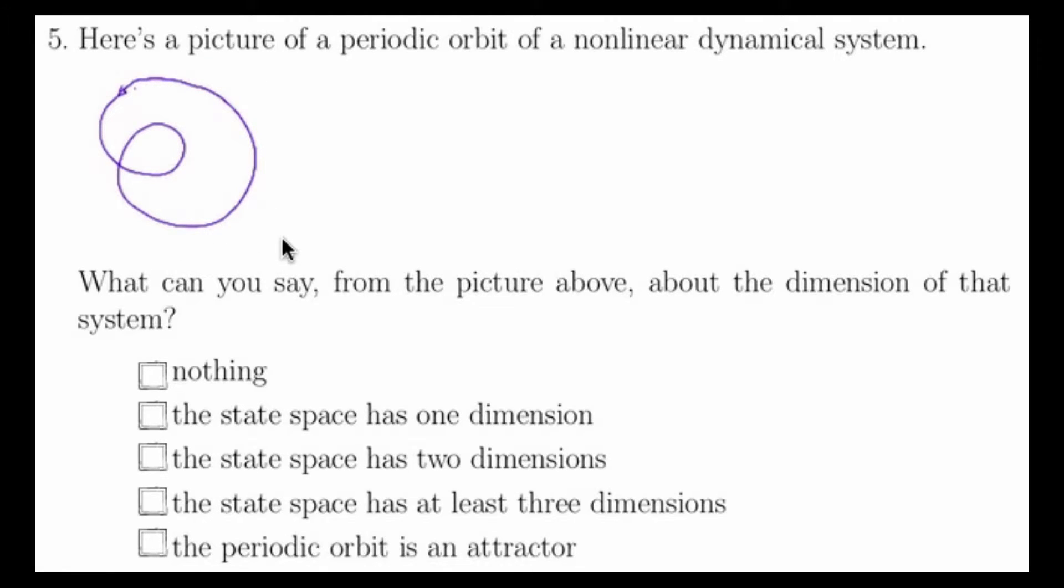What we can also say, the state space cannot be in two dimensions because of this intersection. For the deterministic dynamical systems we are studying, an intersection like this cannot occur. If it could, then at this intersection point in phase space, a trajectory would have two directions to go. This would violate determinism. So we know, because this intersection cannot occur, the state space must have at least three dimensions.